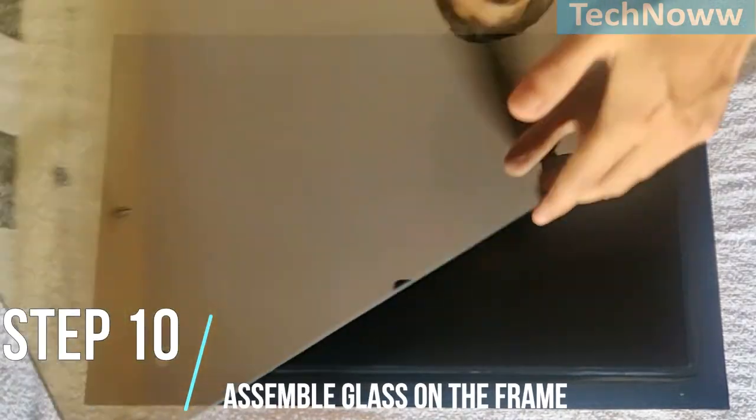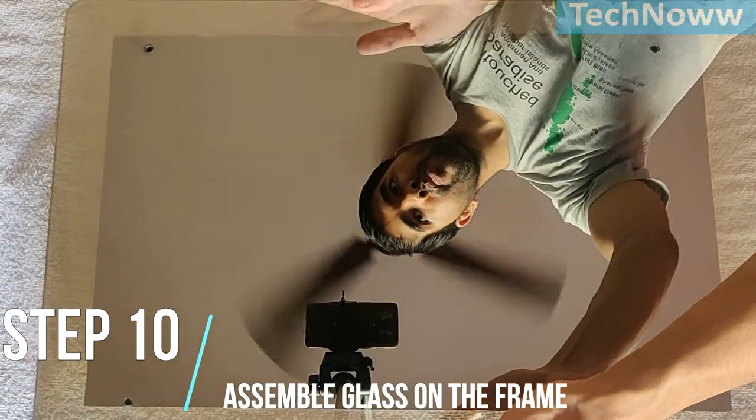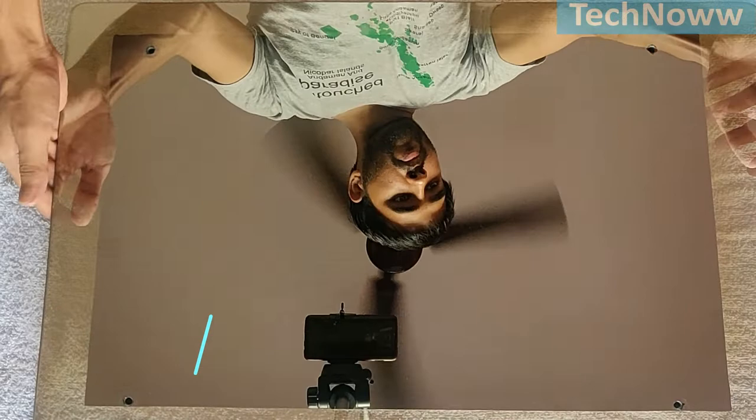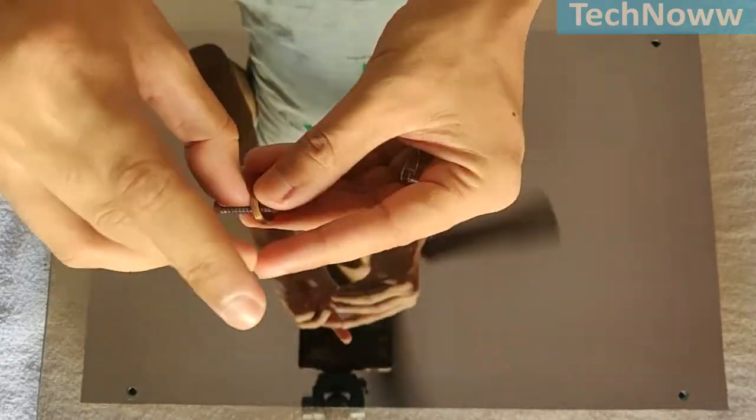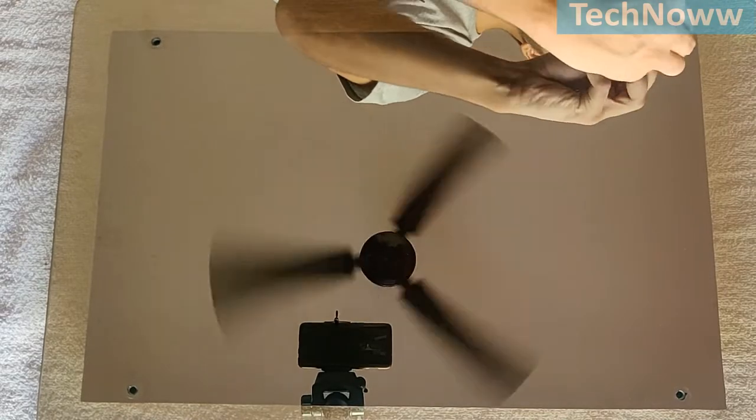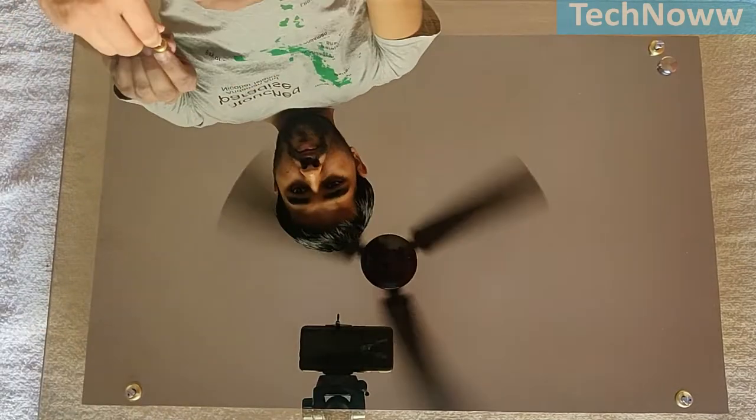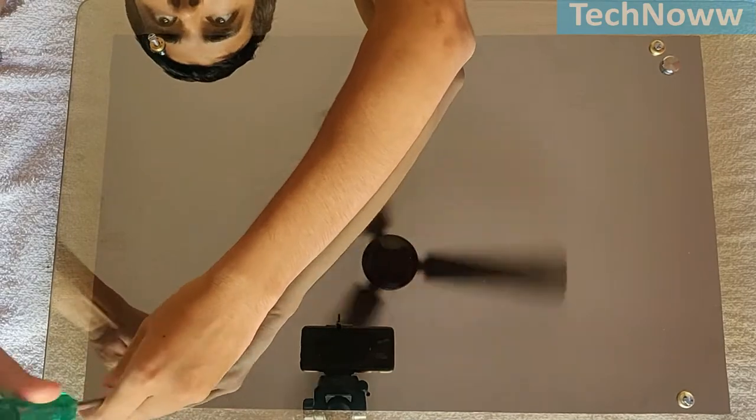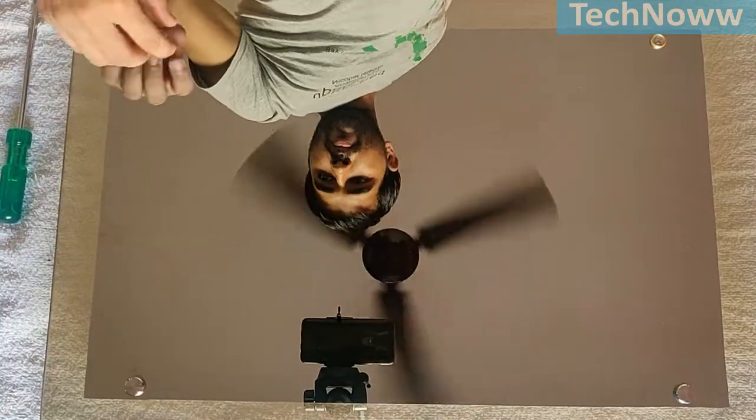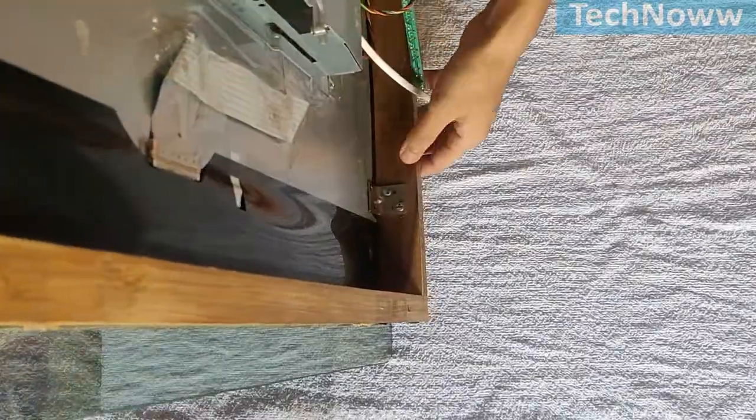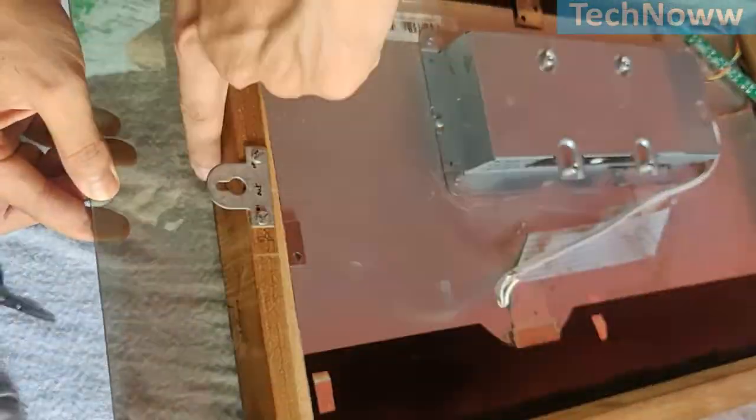Step 10: Assemble the glass on the frame. Gently place the mirror glass on frame and use mirror screws to fasten the mirror glass with the frame. This step may break your glass so perform it gently. Now, turn your assembly and seal the gaps between the frame and the mirror to block dirt.